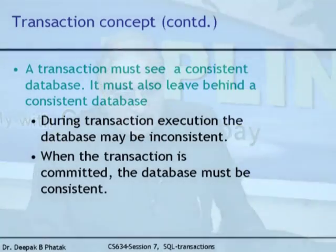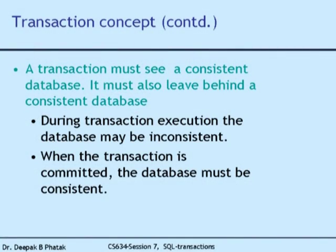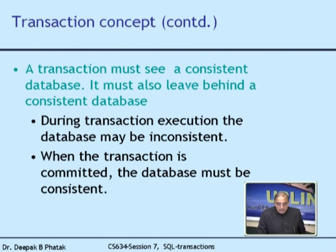Here is the concept. A transaction, which is a unit of program, must see a consistent database and must also leave behind a consistent database. A consistent database means the data integrity of that database is intact. So when a transaction starts, it expects a consistent database, and when it ends, it is expected to leave behind a consistent database.